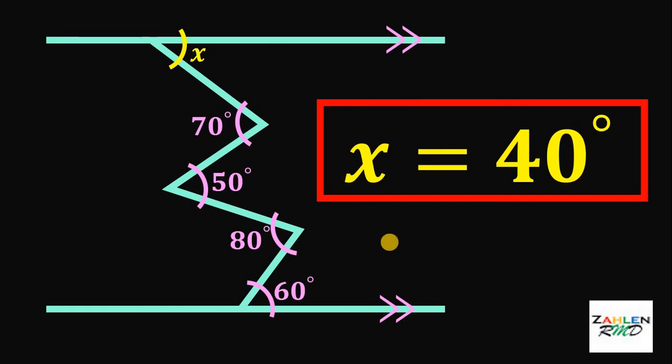Before I end this video, here's the shortcut. If we add angle x, 50 degrees and 60 degrees, it is equal to the sum of 70 degrees and 80 degrees. Therefore, x must be equal to 80 degrees plus 70 degrees minus 60 degrees minus 50 degrees. Or simply, we get 40 degrees.